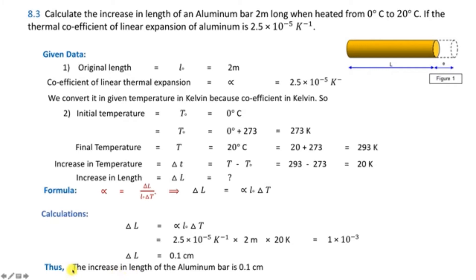Multiplying these values gives ΔL = 1 × 10⁻³ meters. Since the length was in meters, we convert to centimeters by multiplying by 100, giving 0.1 cm as the increase in length of the aluminum bar.